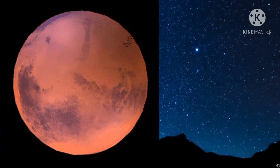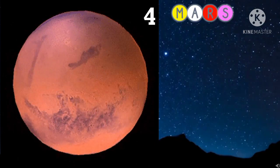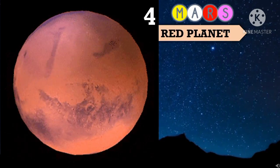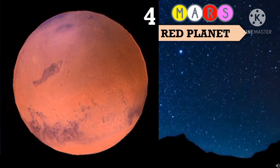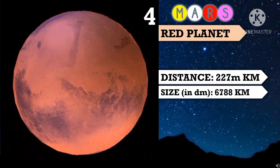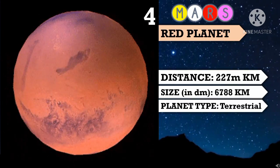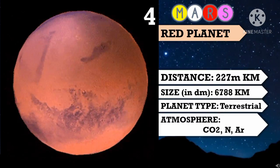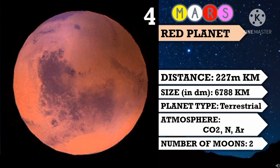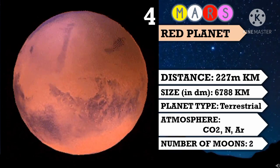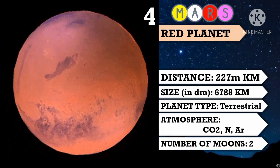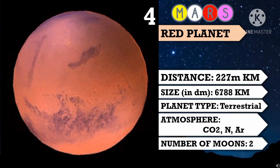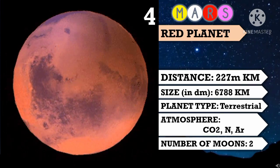The fourth planet is Mars. Mars is also called the red planet. Mars has a very thin atmosphere which consists largely of carbon dioxide and a small percentage of other gases such as nitrogen and argon. It is the last of the terrestrial planets and has two moons.